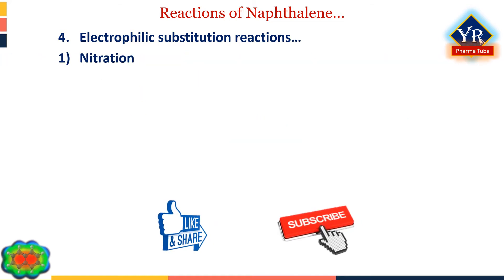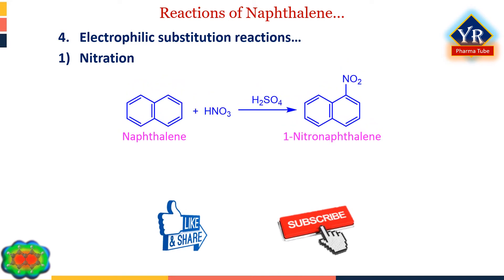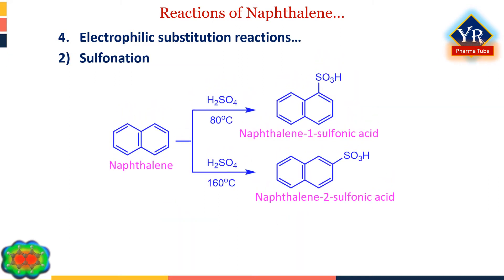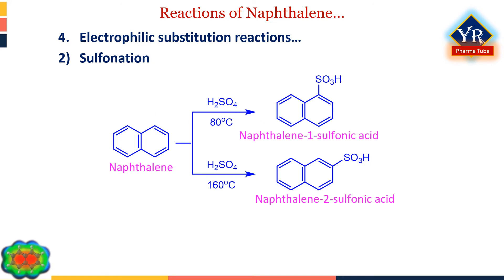Nitration of naphthalene gives 1-nitronaphthalene. Further substitution does not occur in the same ring, and the main products of dinitration are 1,5- and 1,8-dinitronaphthalene. The initial nitro group deactivates that ring to further electrophilic substitution, and attack at the alpha positions of the other ring therefore takes place.